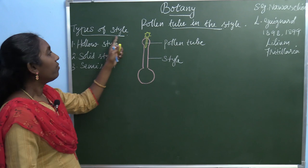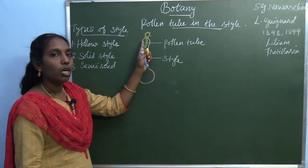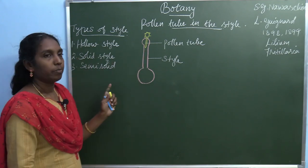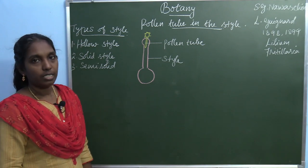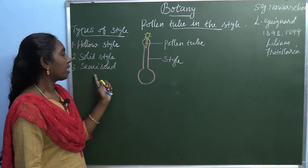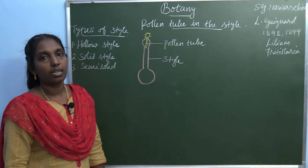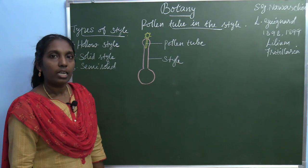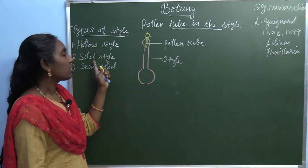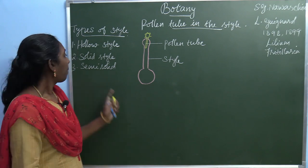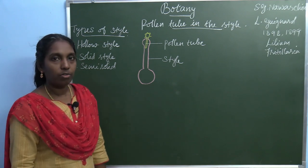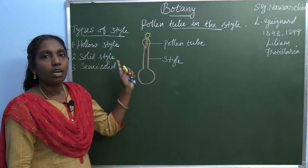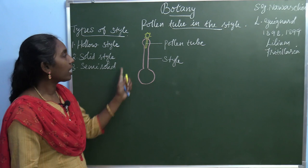Before that, let us see the different types of style. The pollen tube grows along the style region, and it depends upon the type of style. There are three different types of style: hollow style, solid style, and semi-solid style. Hollow style is otherwise called open style; solid style is otherwise called closed style; and semi-solid style is otherwise called half-closed type.